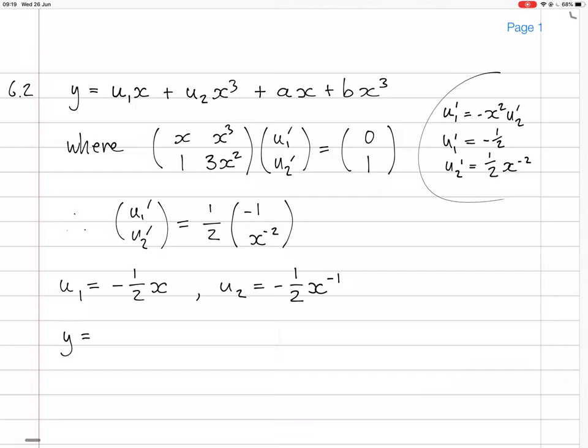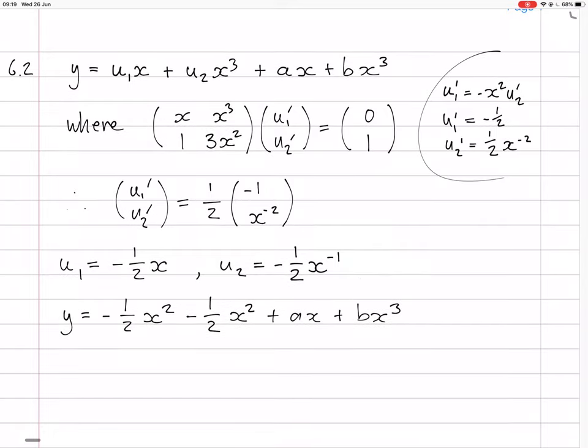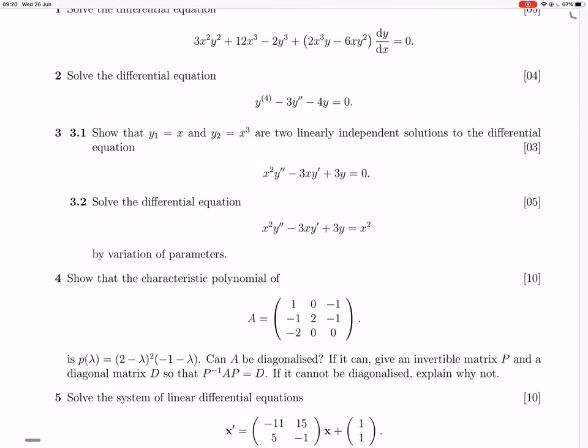So all this means that, well we've already written down the answer technically, but it might simplify in some nice ways. So we have minus a half x, now squared, there's an x there, plus minus a half and x to minus one, x cubed, x squared. Yes, there is a nice... it's just minus x squared plus ax plus bx cubed.